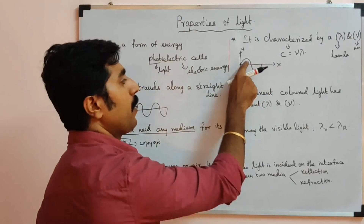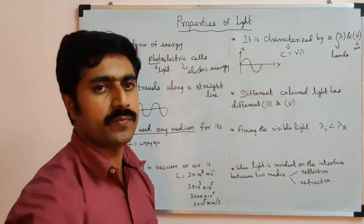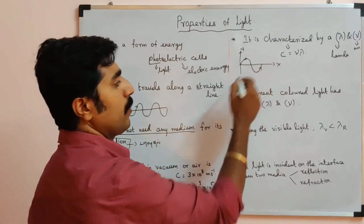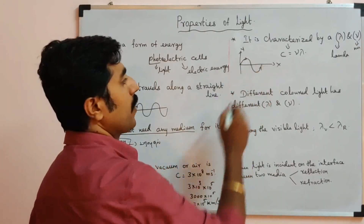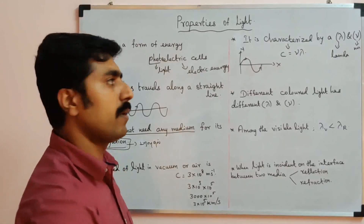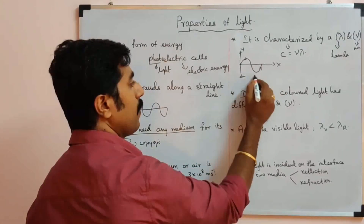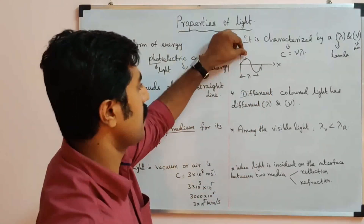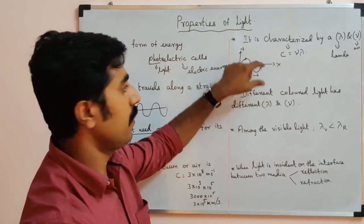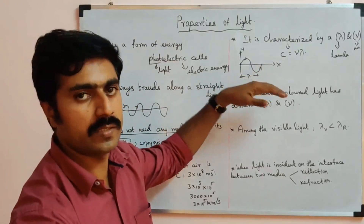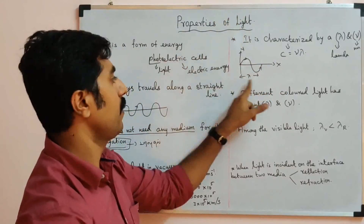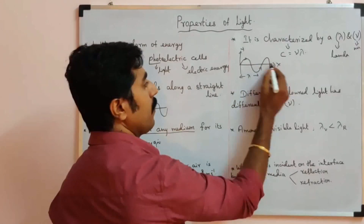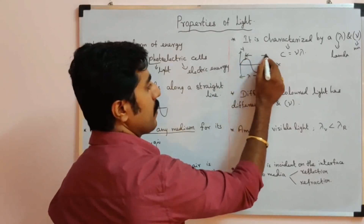A wave has positive and negative parts — crest and trough. The wavelength is the distance from crest to crest, or trough to trough. That is the length of one complete wave cycle.